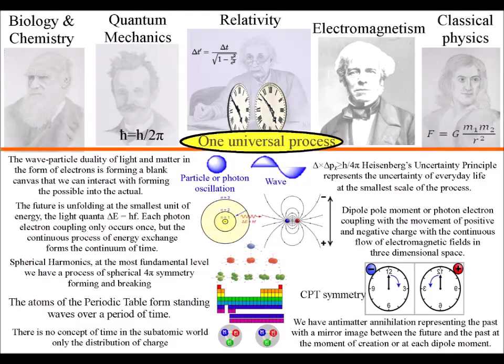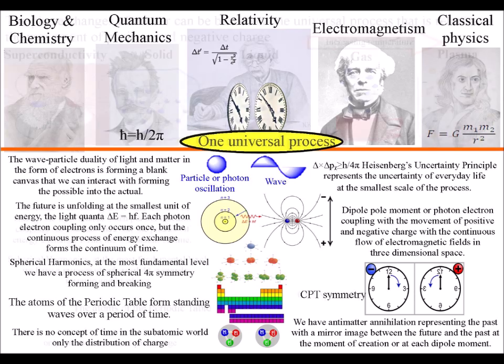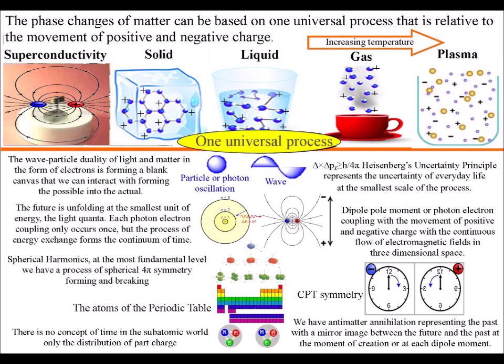Light is a wave and only has particle characteristics when it is interacting with matter, when it is absorbed and emitted relative to the atoms of the periodic table.